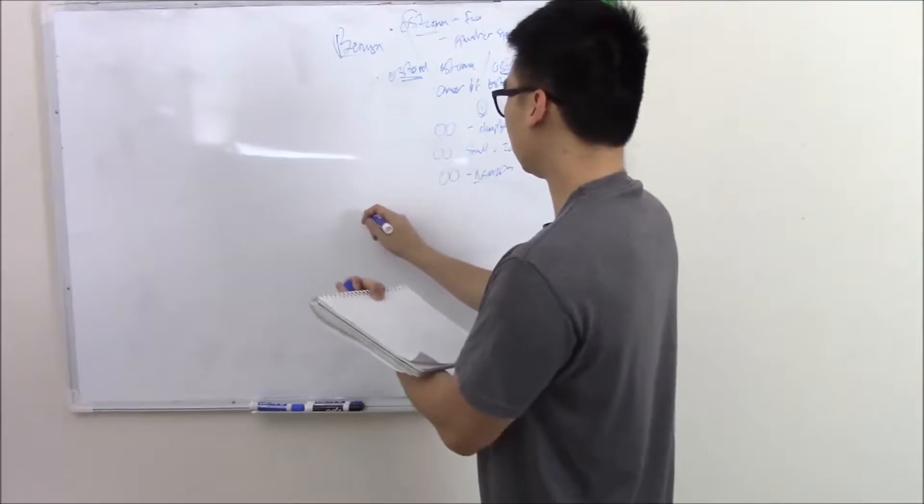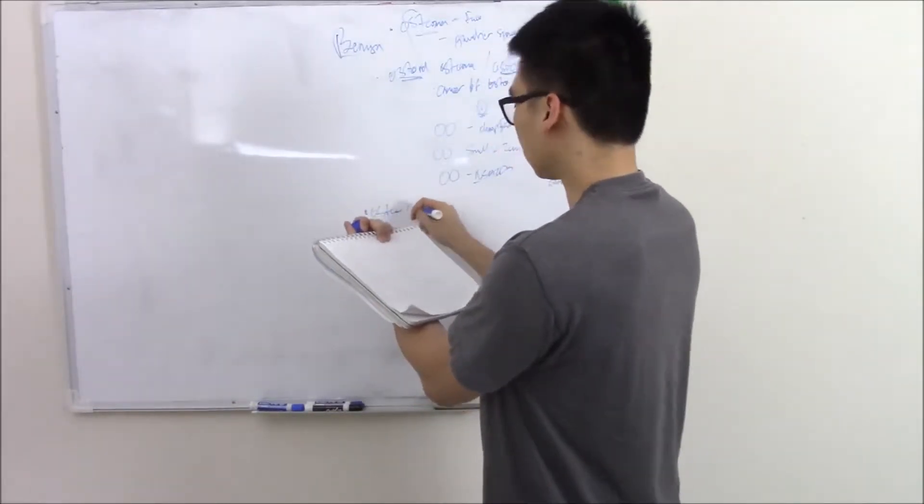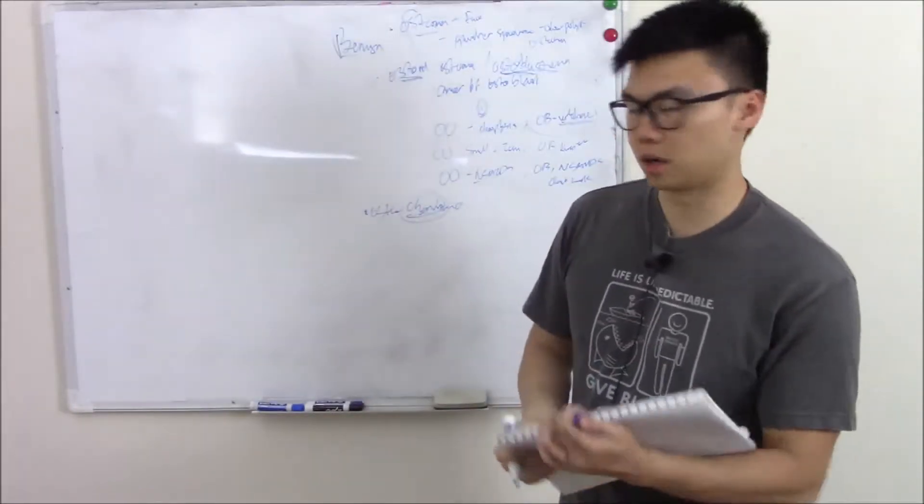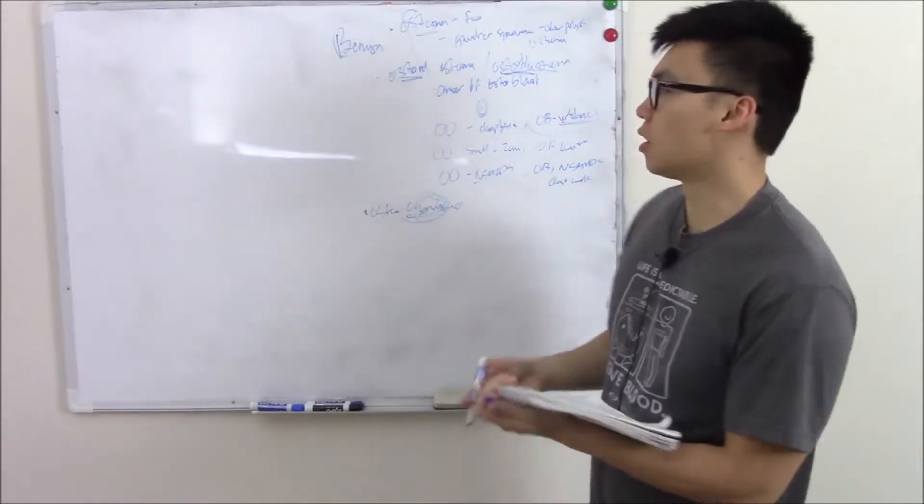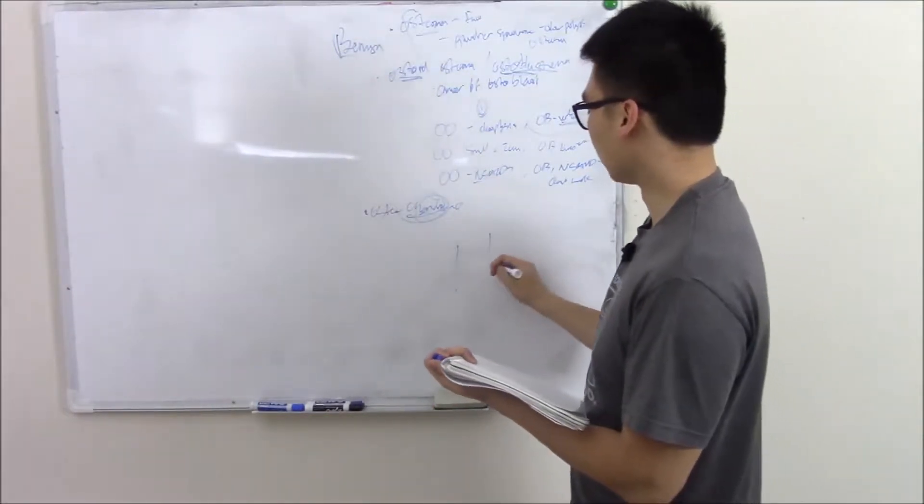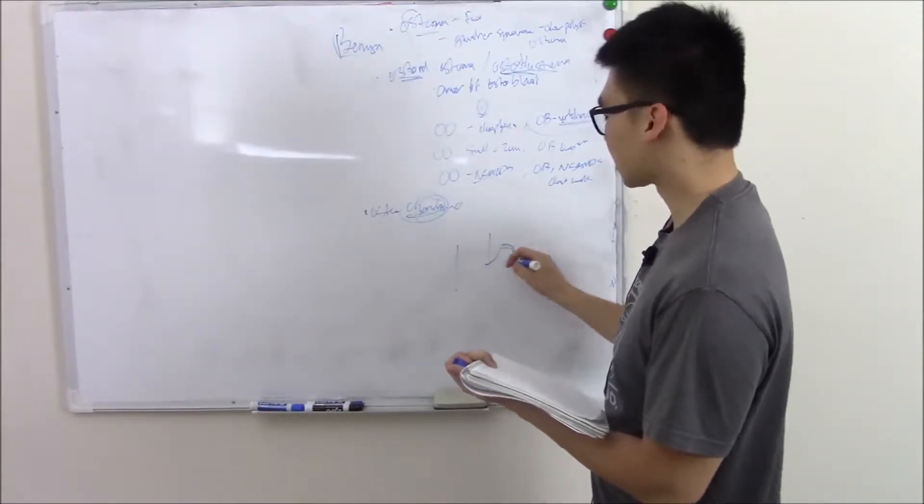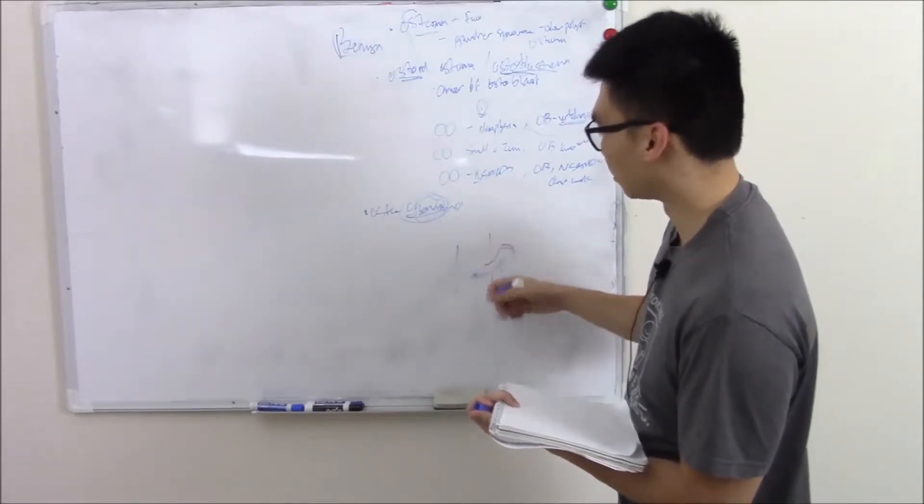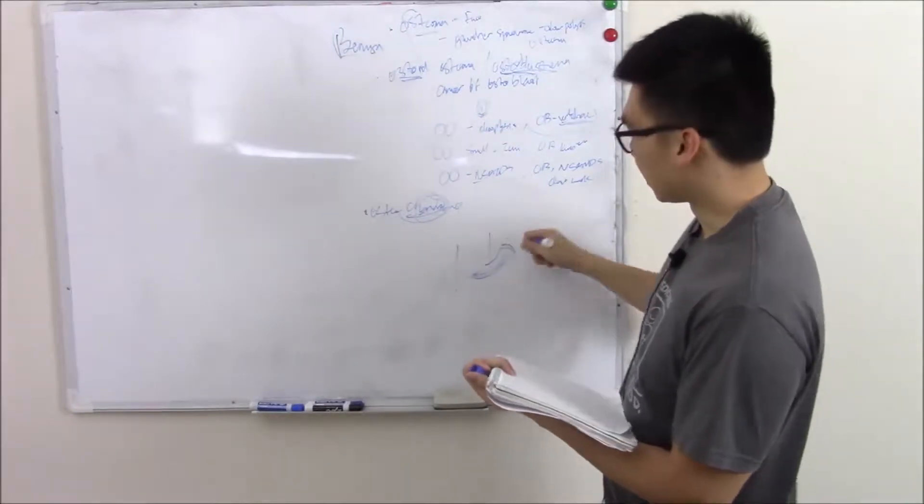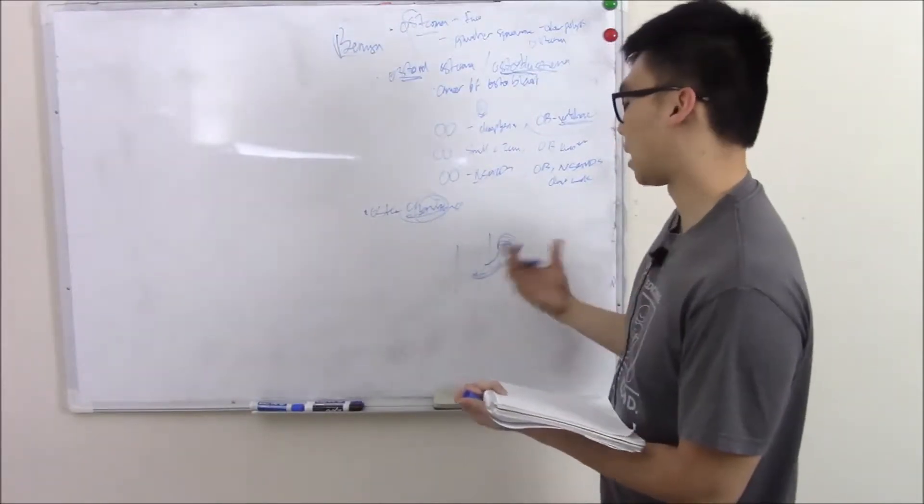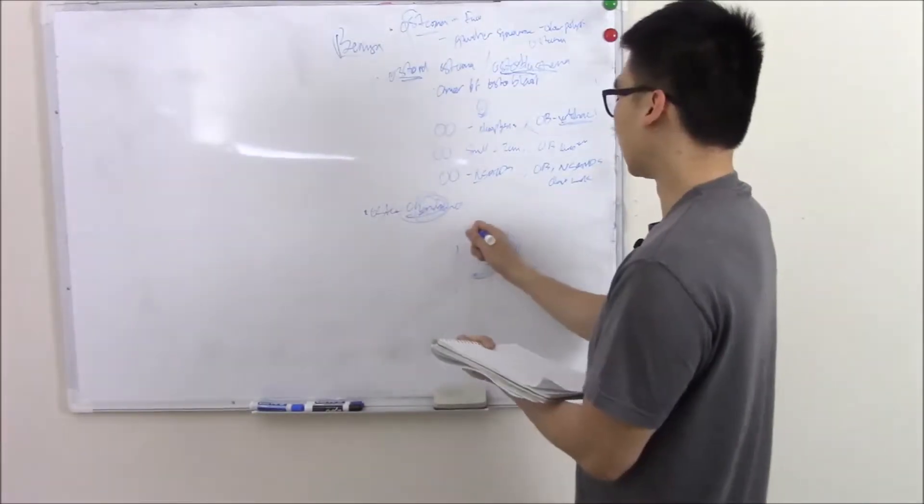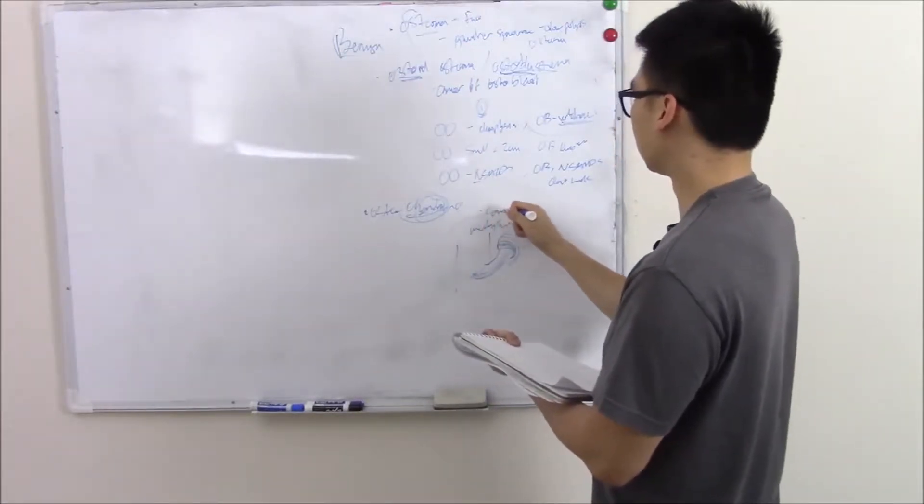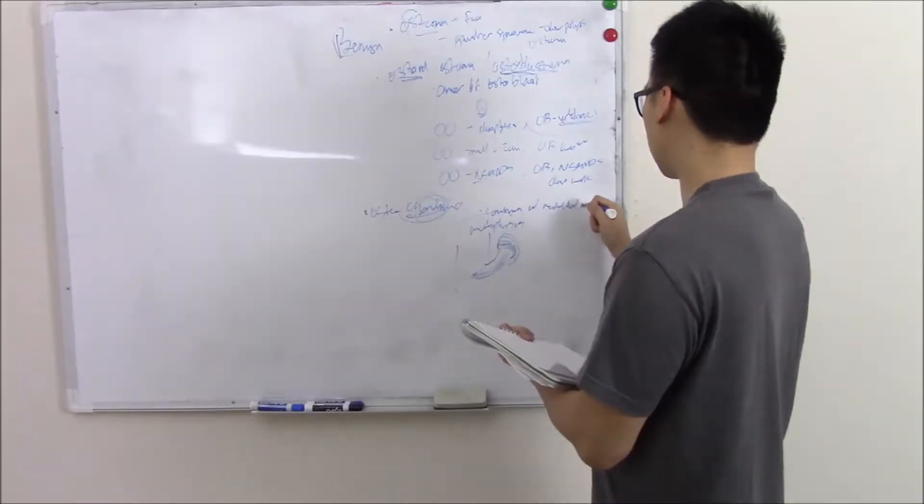Next benign neoplasm. Osteochondroma. Tell me, what's in the name? Chondro cartilage. So it's a bone neoplasm with a cartilage cap. It actually starts in your marrow. So it's continuous with your marrow and continuous with the medulla of your bone. So it kind of grows out from the inside and then at the end it's like a mushroom. It has a little cartilage cap.